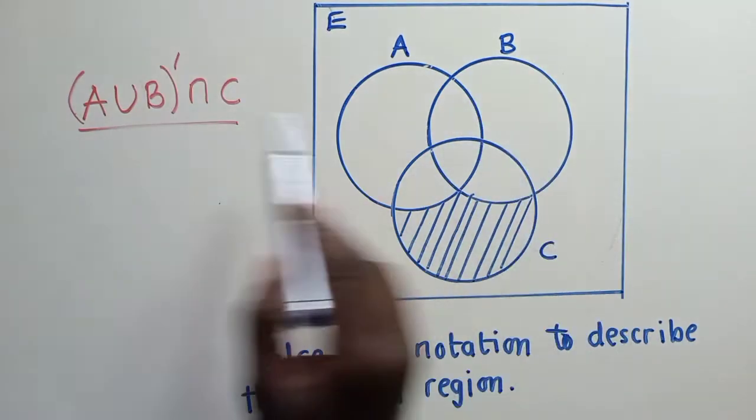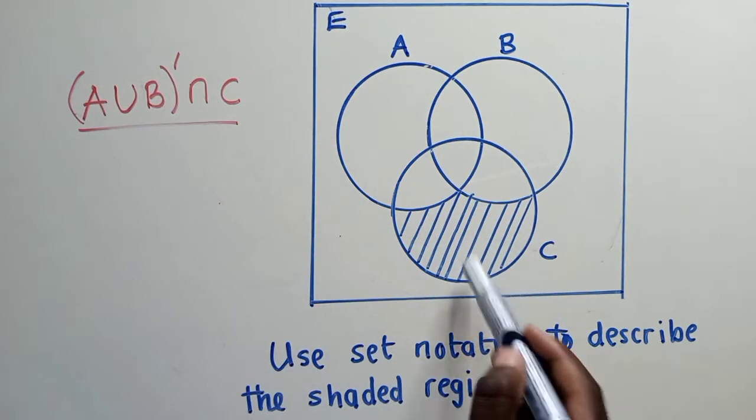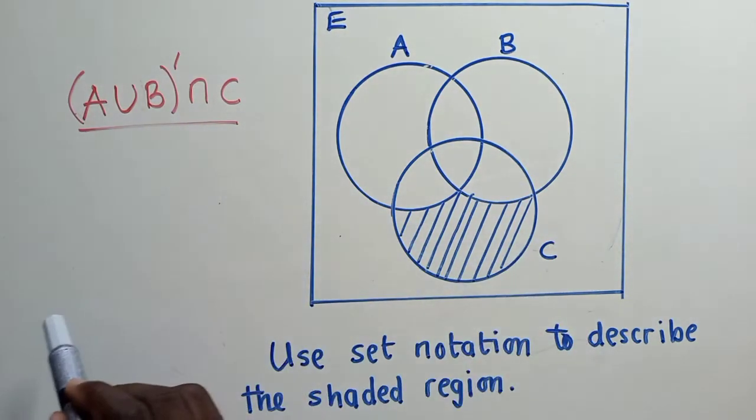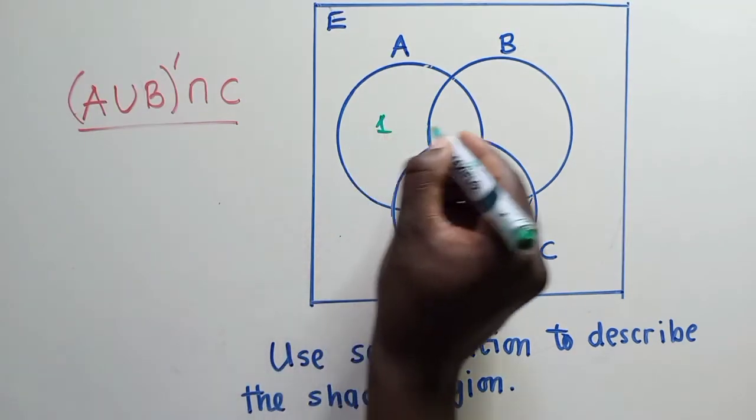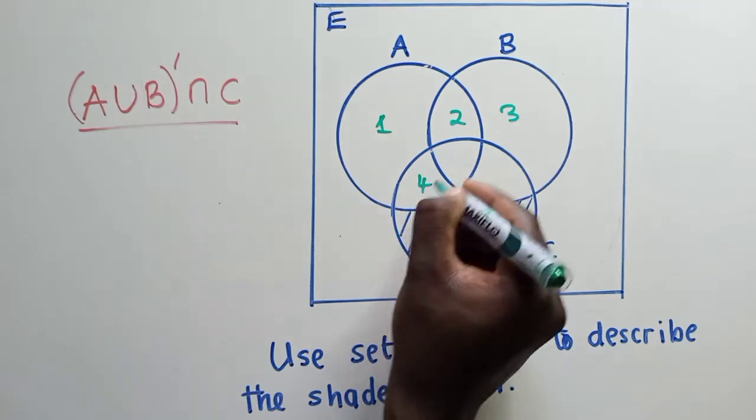Let's prove. You can just see that A and B are not included, only part of C is included. So now for us to prove, we are going to put numbers here.